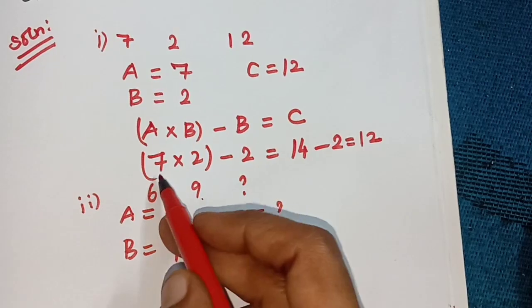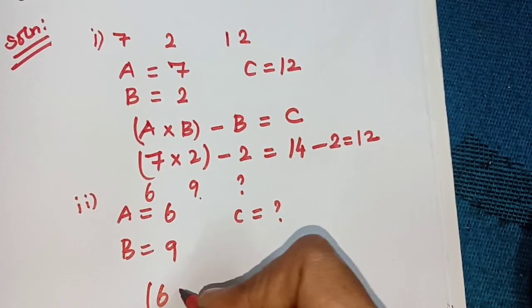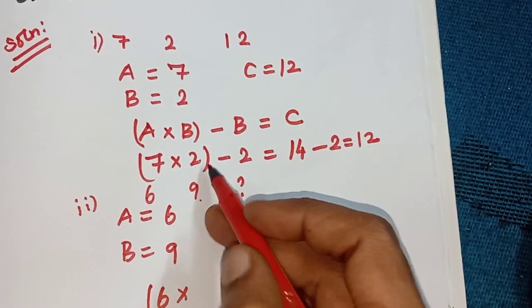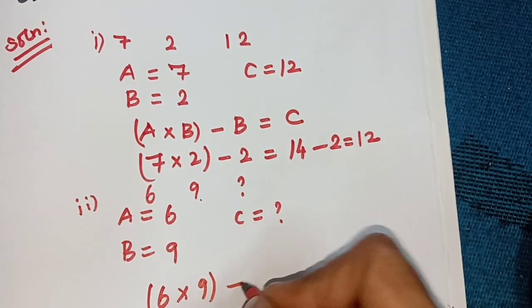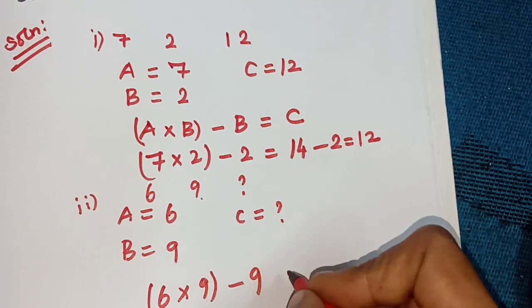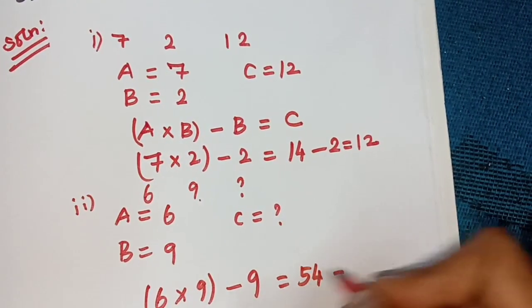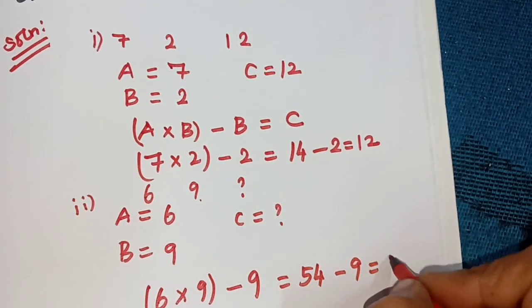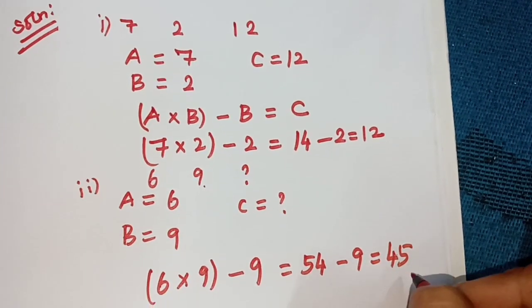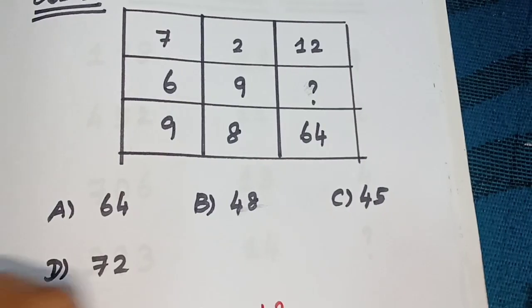Same procedure: A is 6, 6 into B is 9, 6 into 9 minus 9 equals 54 minus 9 equals 45. The product C is 45. The answer is option C, 45.